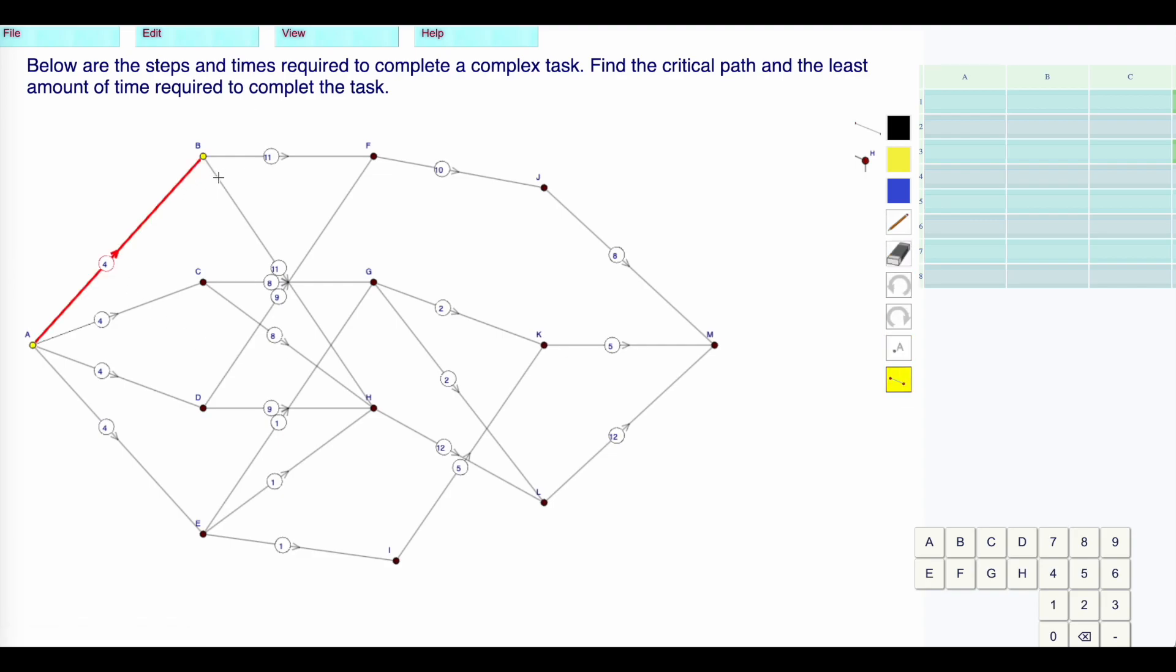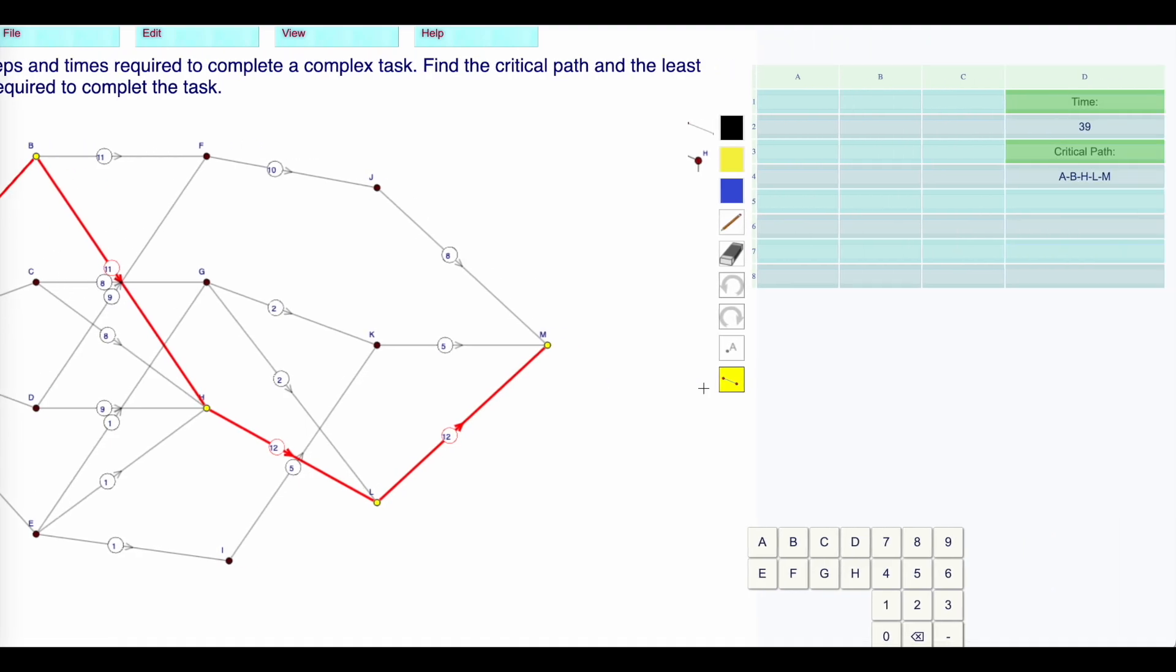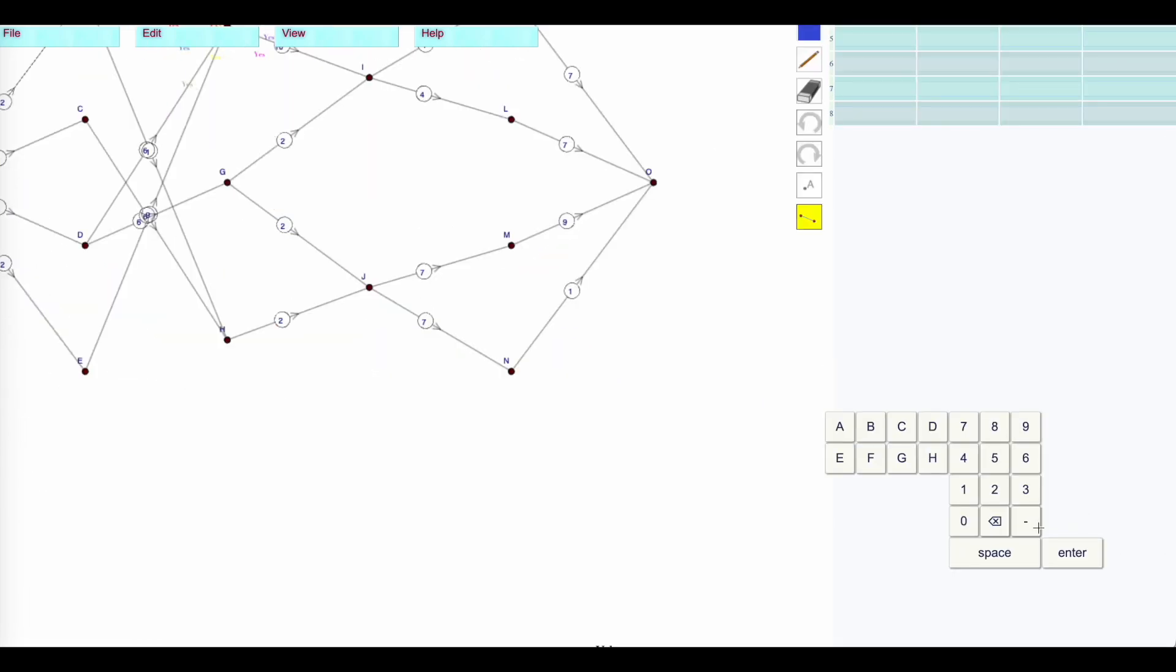If I go up to here, down to there, over to here, over to there, I have a critical path of 39. Press enter. And it is right.